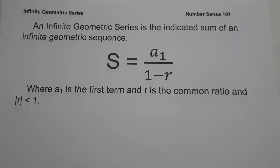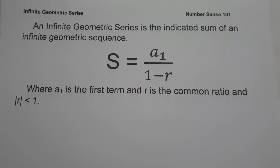If the common ratio is less than 1, the series is converged, meaning the sum can be determined. If the common ratio is greater than or equal to 1, the series is diverged, meaning we cannot determine the sum of the given series. Those are the concepts you need to remember in order to solve infinite geometric series.